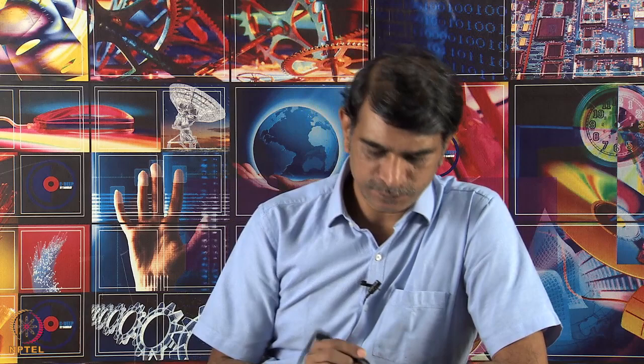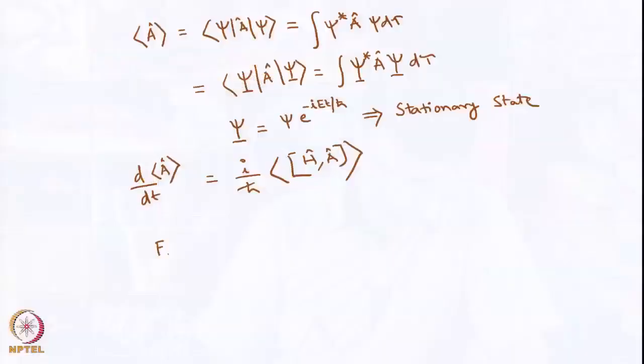This is very useful in spectroscopy because the operator A corresponding to the interaction of light with matter or with a molecule or atom does not commute with the Hamiltonian. Therefore, one can make a transition from one energy level, say the 1s orbital in hydrogen, to another energy level such as 2s or 2p. There is another interesting point: the uncertainty relation of operators f and g is always greater than half of the commutator [f, g].